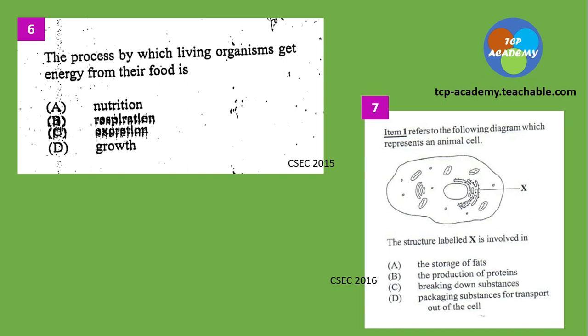Question number six: the process by which a living organism gets energy from their food is known as — not so much a difficult question, but it's from the CSEC 2015 paper.